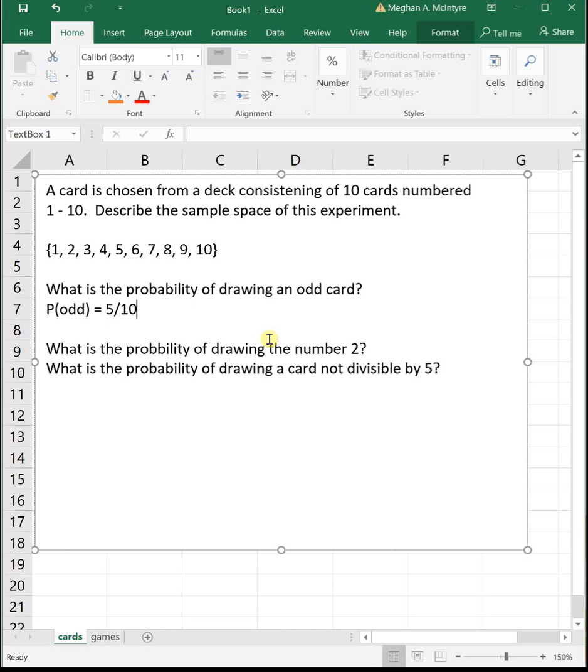So the probability of drawing an odd is 5 out of 10, and you are welcome to leave all of your probability answers as unreduced fractions. Please do not feel that you need to reduce or simplify. When students do reduce and simplify, they tend to make careless mistakes and get things wrong. So whenever I'm grading something, you can leave it just like this as an unreduced fraction.